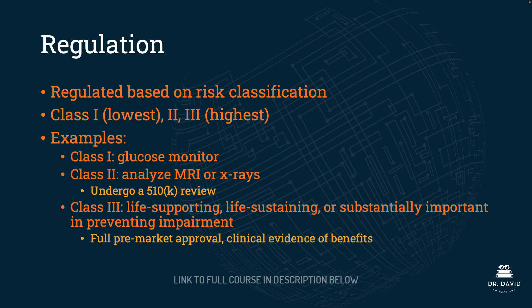When it comes to regulation, the FDA regulates software as a medical device based on risk classification. There are three classification categories: class one is the lowest and class three is the highest. An example of a class one device would be a glucose monitor, which is the lowest risk classification category.